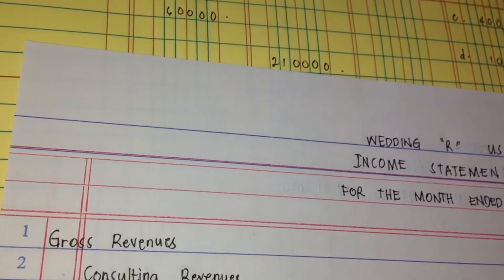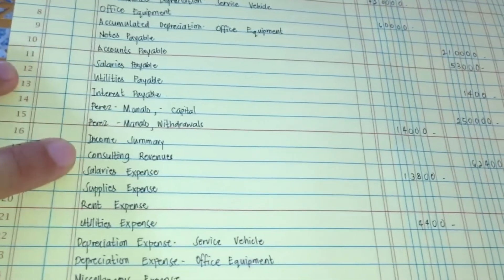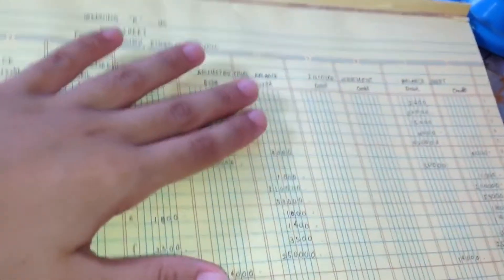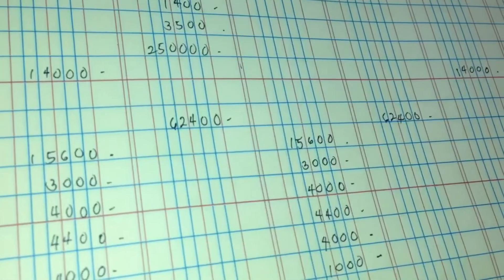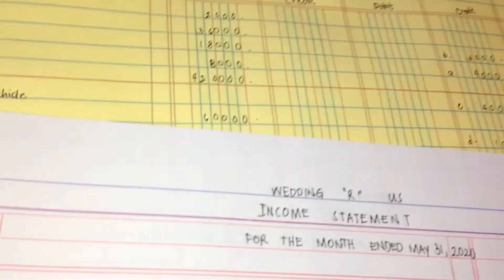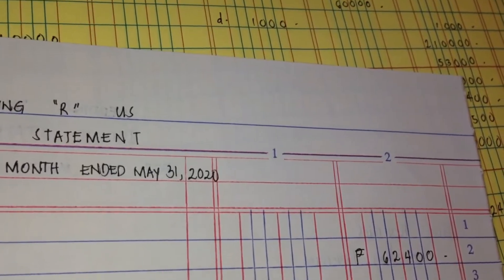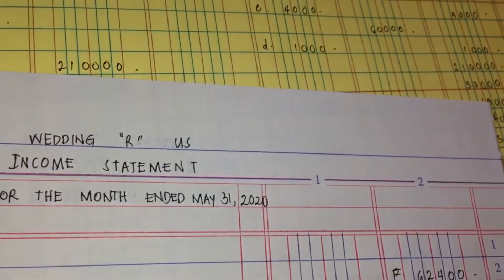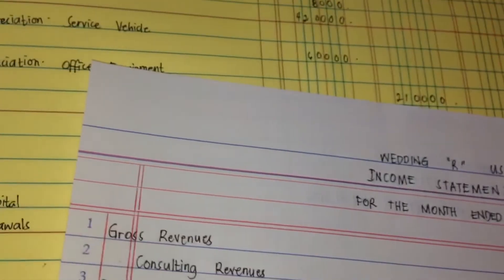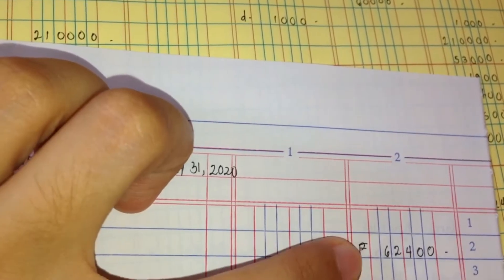Ang title ay consulting revenues, because our service is for wedding consulting. Ang consulting revenues natin, the amount is 62,400 pesos. Transfer natin sya sa income statement natin — consulting revenues, 62,400. Hindi natin kailangan maglagay ng debit and credit kasi financial statements na ang ginagawa natin. Since consulting revenues is alone, ilalagay na natin sya sa second column.